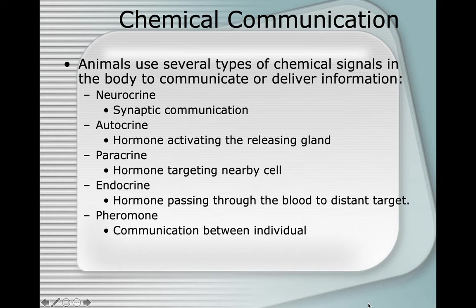Animals use several types of chemical signals in the body to communicate or deliver information. Neurocrine has to do with synaptic communication. Autocrine involves a hormone activating the release gland — auto means self. Paracrine involves a hormone targeting nearby cells — para means near. Endocrine involves a hormone passing through the blood to distant targets — endo means inside. And pheromone involves communication between individuals.